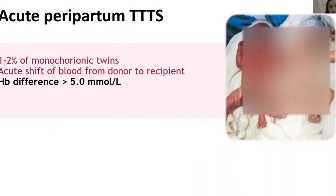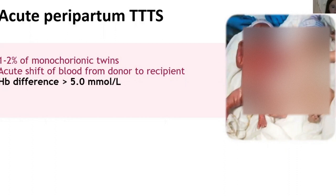In acute peripartum TTTS, there is an acute blood shift from the donor to the recipient through very large placental anastomoses. We do not know why it occurs — maybe it is due to fetal positioning or uterine contractions — but it happens during delivery. The donor loses blood very quickly, becoming hypovolemic and acutely anemic, while the recipient receives all that blood and becomes acutely polycythemic.